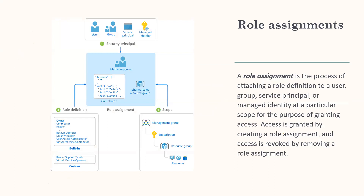A role assignment is the process of attaching a role definition to a user, group, service principal, or managed identity at a particular scope for the purpose of granting access. For example, in the diagram, the marketing group has been assigned the contributor role for the pharma-sales resource group. This means users in the marketing group can create or manage any Azure resource in that resource group. Marketing users do not have access to resources outside the pharma-sales resource group unless they are part of another role assignment.